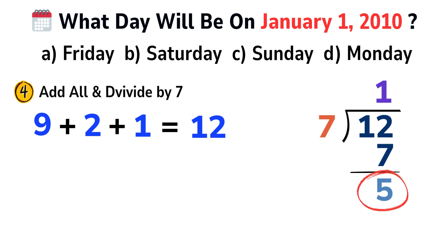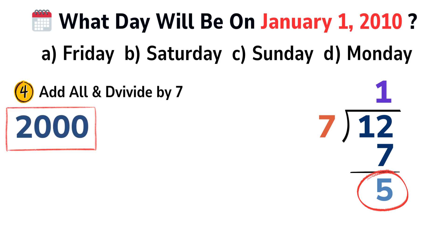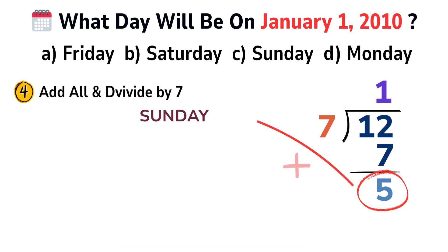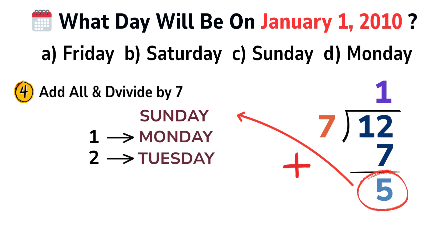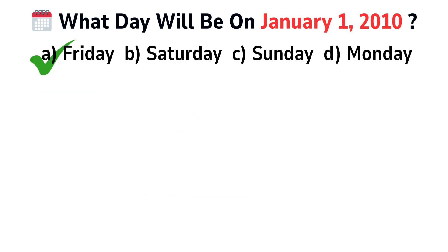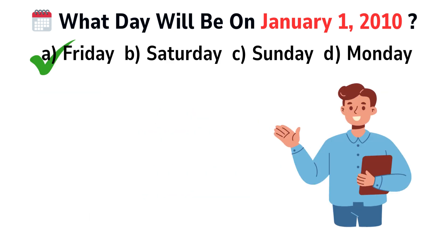The remainder tells you how many days to count forward from the century base day. In our case, the century base is 2000, and from the century base day chart we consider Sunday. From Sunday, count 5 days forward: Monday, Tuesday, Wednesday, Thursday, Friday. The correct answer is option A. See how easily we solved it!